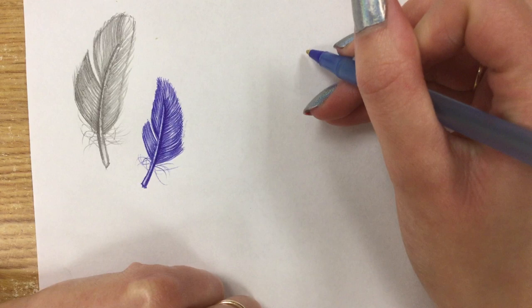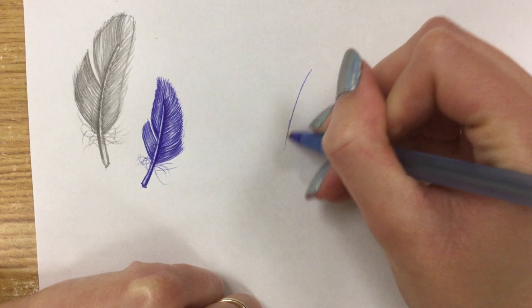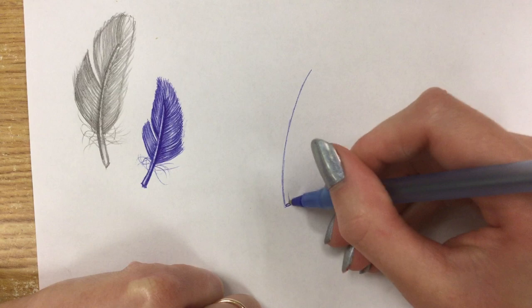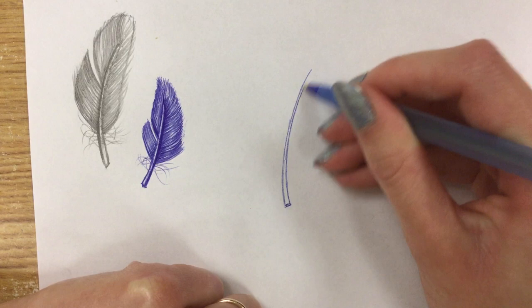So I always start with the main kind of stem in the middle. I don't know feather anatomy super well, so I'm not really sure what you would call this, but I start with that little arch in the middle, put a little bit of a nub at the bottom for where the feather came out, and then I slowly narrow it down as I get to the top.